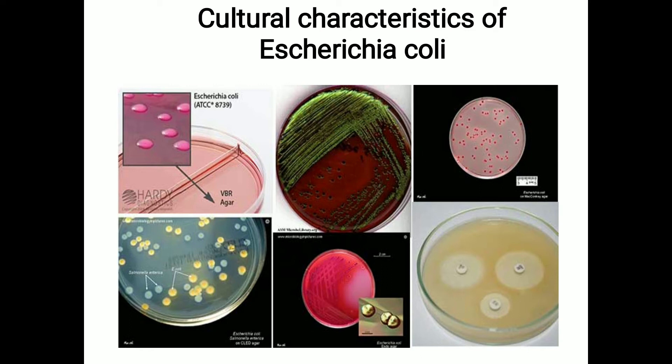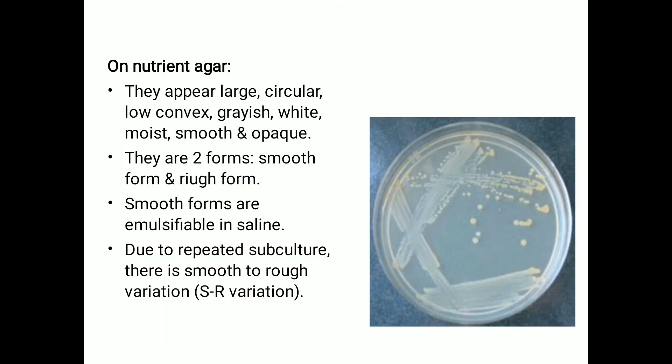First, we have a simple media — nutrient agar. In nutrient agar, the colonies appear large, circular, low convex, grayish-white, moist, smooth, and opaque. They occur in two forms: a smooth form and a rough form.